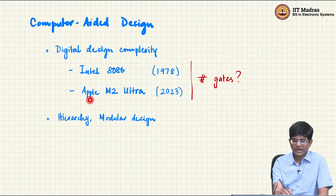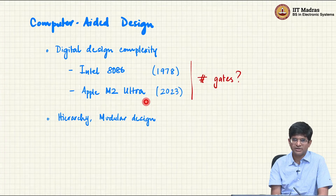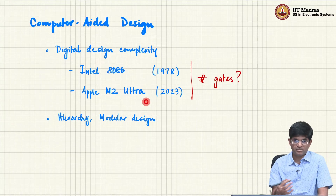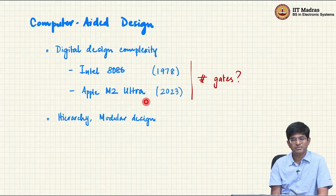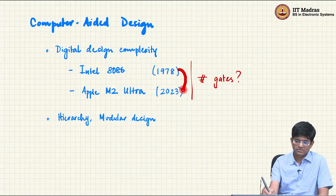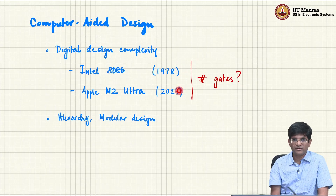On the other hand, we have something like the Apple M2 Ultra chip that came out last year, which is basically part of their M series of microprocessors. It has multiple different processing elements — many ALUs, a lot of memory storage, and all of that. If you look at it, the time difference is about 45 years.